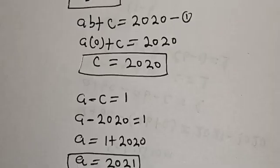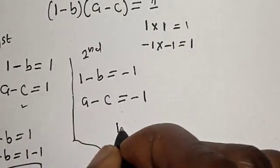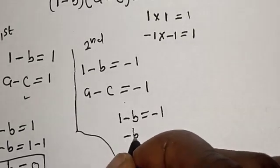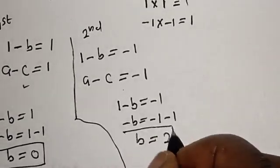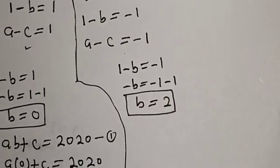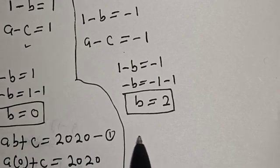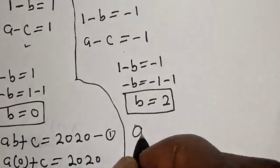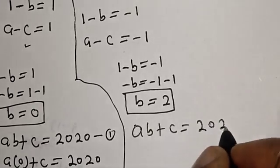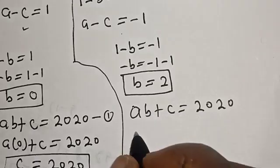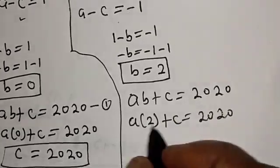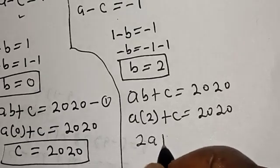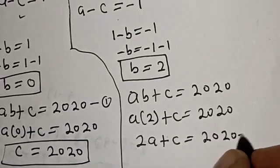For the second case, 1 minus B is equal to minus 1, so B is equal to 1 minus (minus 1), giving B is equal to 2. Now substituting B into equation 1: A(2 + C) is equal to 2020, so 2A plus C is equal to 2020. Let's call this equation star.